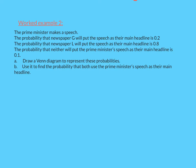Often a Venn diagram will be in probabilities, as in this case. So the Prime Minister makes a speech. The probability that newspaper G will put the speech as their main headline is 0.2. And for L is 0.8. But the probability that neither will is 0.1. We're going to draw a Venn diagram. Now in this case, there are only two events, G and L. So the Venn diagram will look like this.